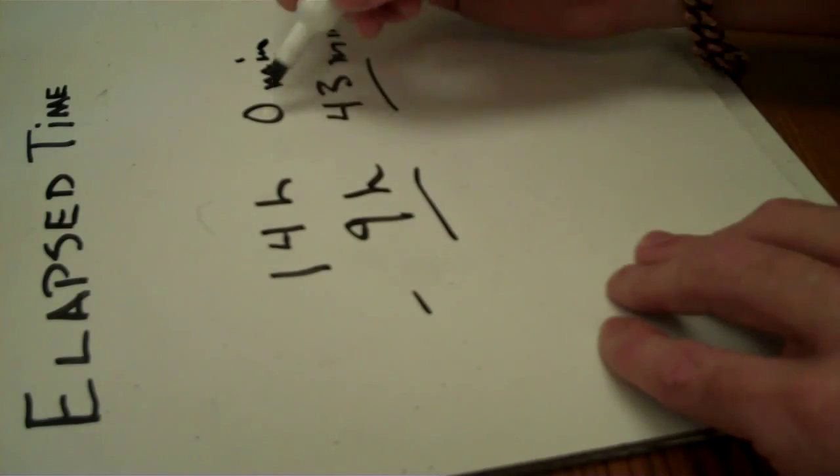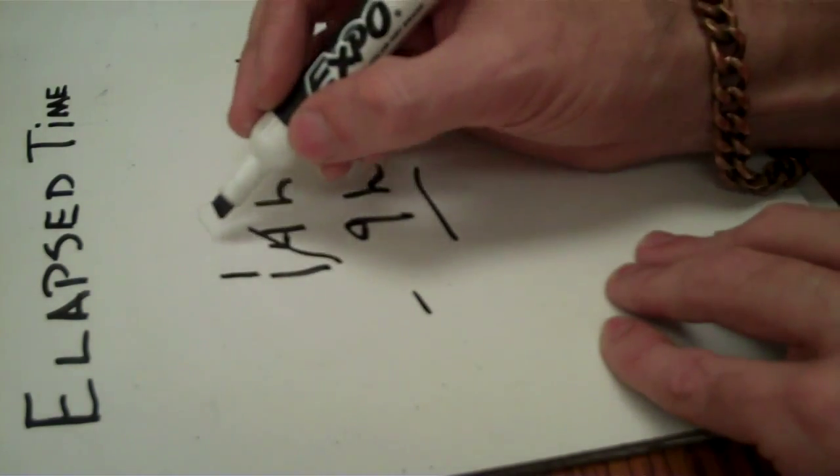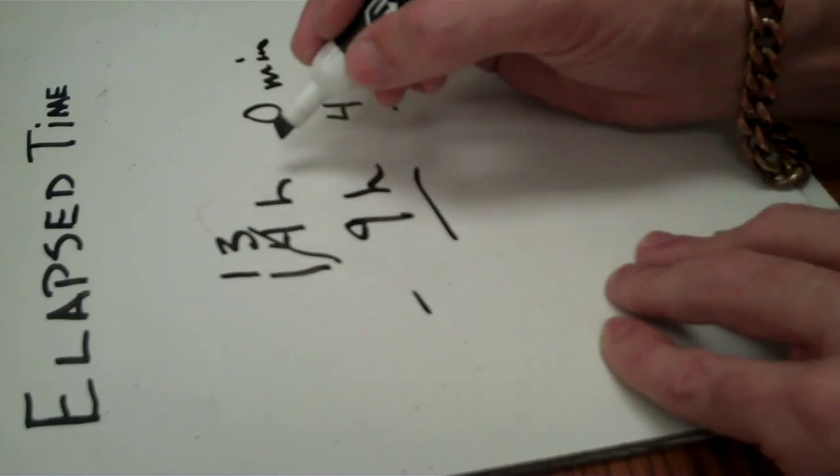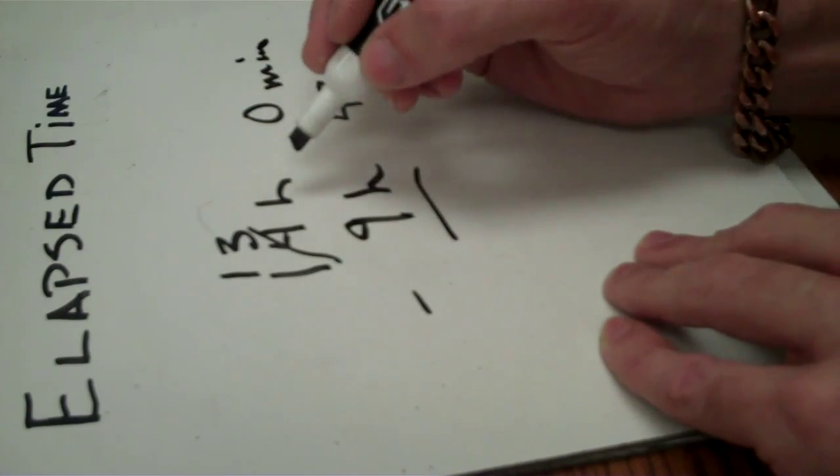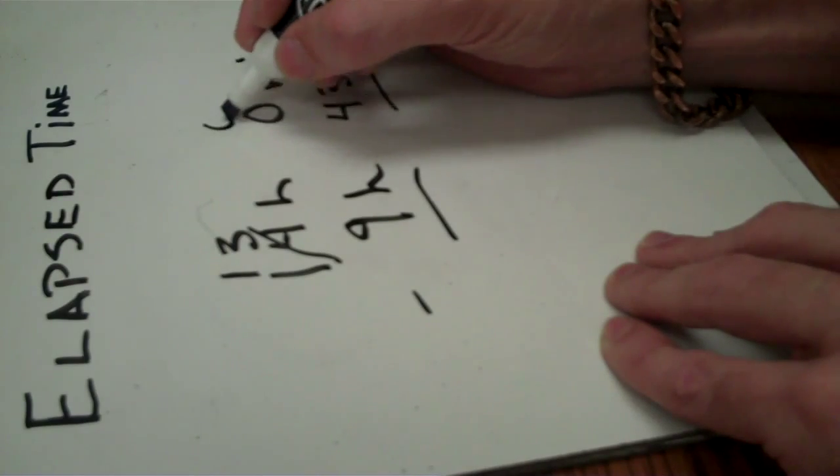And looking at it, you can't take 43 minutes from 0 minutes. So let's borrow from this hour. Now, we didn't borrow 1 hour. Well, we actually did. But what we did, we borrowed 60 minutes.